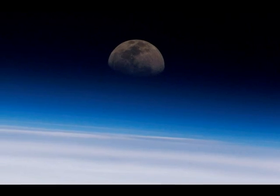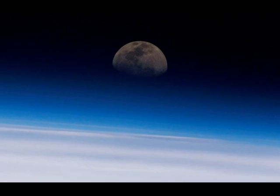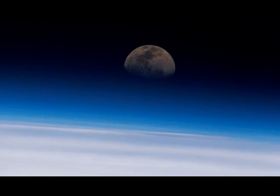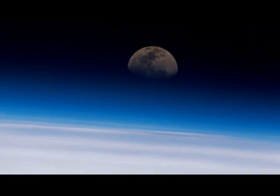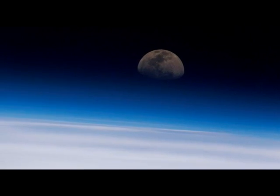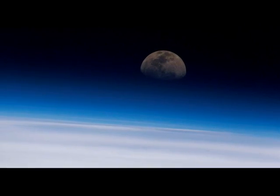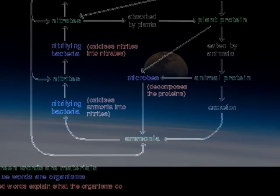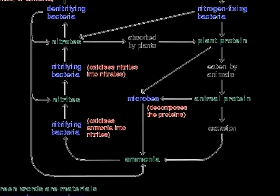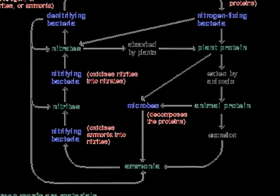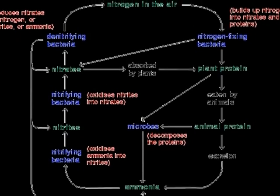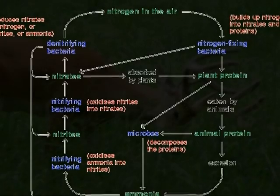The Nitrogen Cycle. About 80% of the Earth's atmosphere is nitrogen. Unfortunately, nitrogen can't be used by most living organisms. It has to first be fixed by certain bacteria. The bacteria chemically combine nitrogen in the air to form nitrates and ammonia, so it can be used by plants and turned into plant proteins.